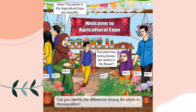Now let us look at this picture. Welcome to the agricultural expo! The plants in this agricultural expo are beautiful. This plant has many leaves, but where is the flower? Look at this picture — can you identify the differences among the plants in this expo? We will learn about this later.